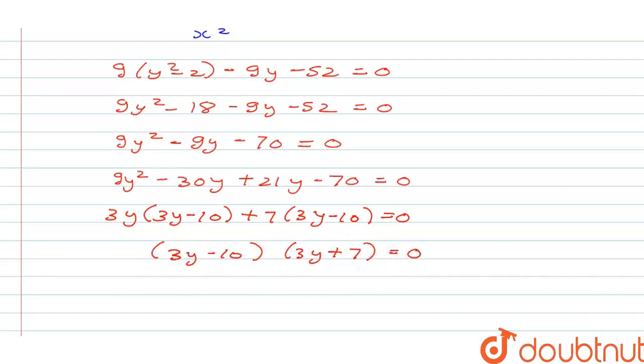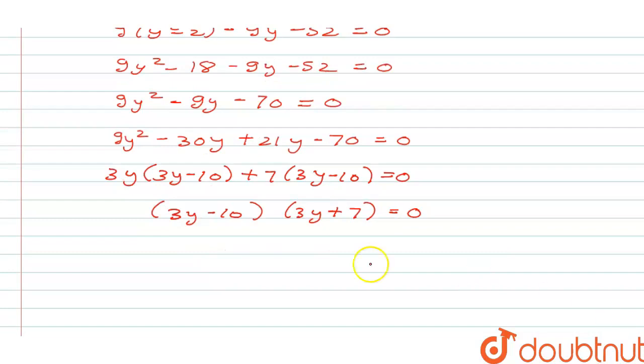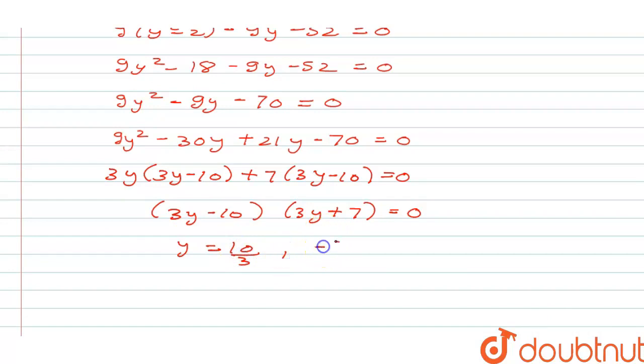Equating both factors to zero, we get y equals 10 by 3 and y equals minus 7 by 3.